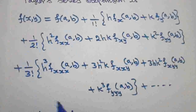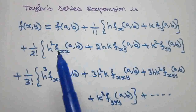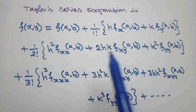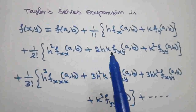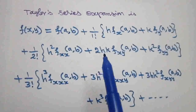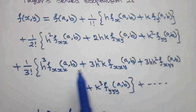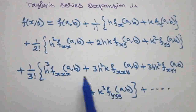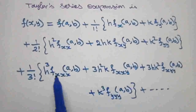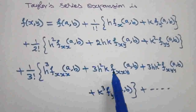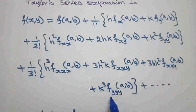This is the Taylor series expansion formula. Notice the second-order term is like (a+b)², giving a² + 2ab + b², where h represents x and k represents y. So h² means fxx, hk means fxy, and k² means fyy. The third-order term is like (a+b)³: a³ + 3a²b + 3ab² + b³, so h³ gives the xxx term, h²k gives the xxy term, hk² gives the xyy term, and k³ gives the yyy term.